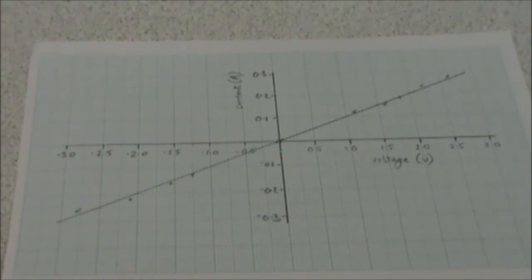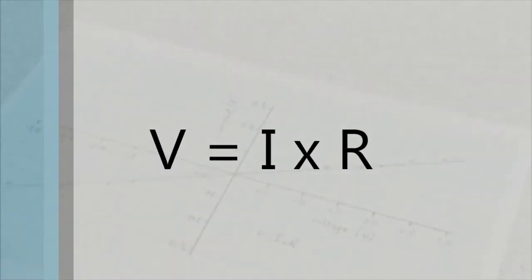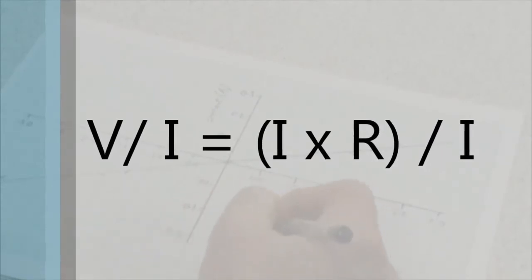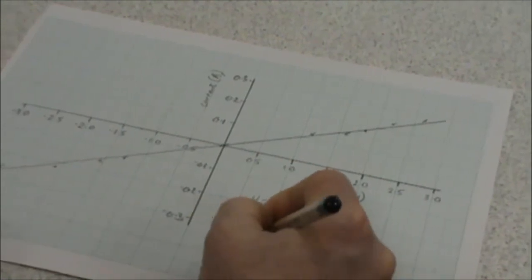This graph shows us that our value for our resistor never changed throughout the experiment because the gradient of the line will actually give us the resistance of the resistor if we do a little bit of maths. Using Ohm's law, which of course is V equals I times R, we can rearrange that to give us the resistance. So to rearrange it we divide both sides by I. Those two cancel out, which leaves us V over I equals R.